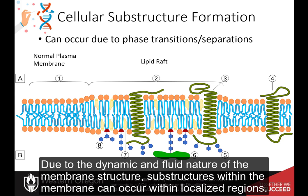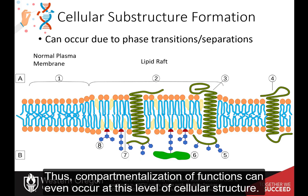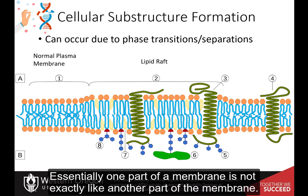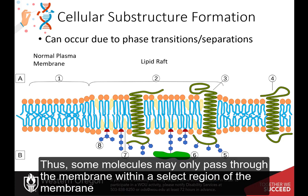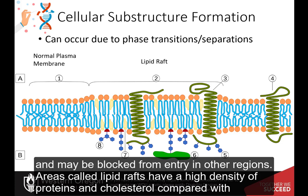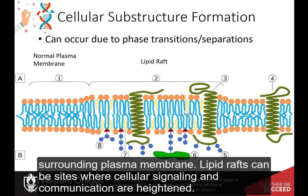Due to the dynamic and fluid nature of the membrane structure, substructures within the membrane can occur within localized regions. Thus, compartmentalization of functions can even occur at this level of cellular structure. Essentially, one part of a membrane is not exactly like another part of the membrane. Thus, some molecules may only pass through the membrane within a select region and may be blocked from entry in other regions. Areas called lipid rafts have a high density of proteins and cholesterol compared with surrounding plasma membrane. Lipid rafts can be sites where cellular signaling and communication are heightened.